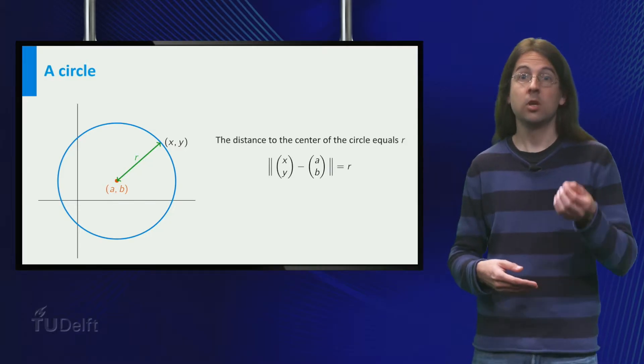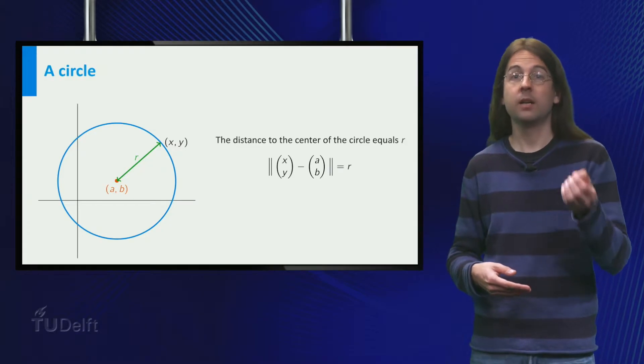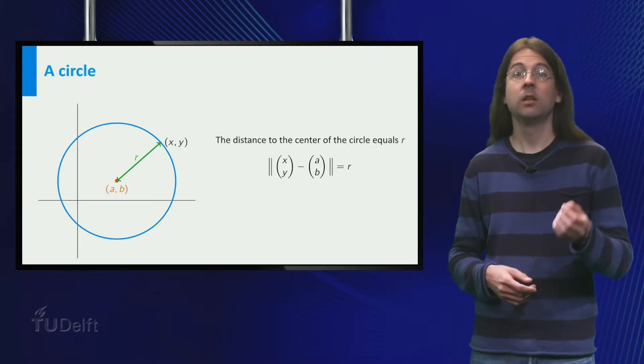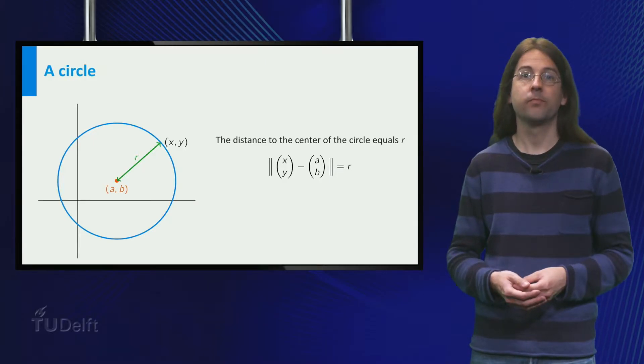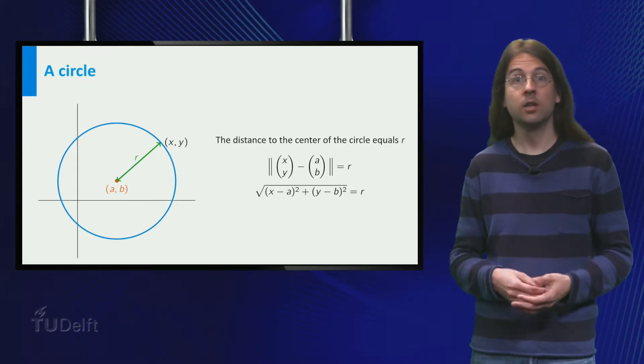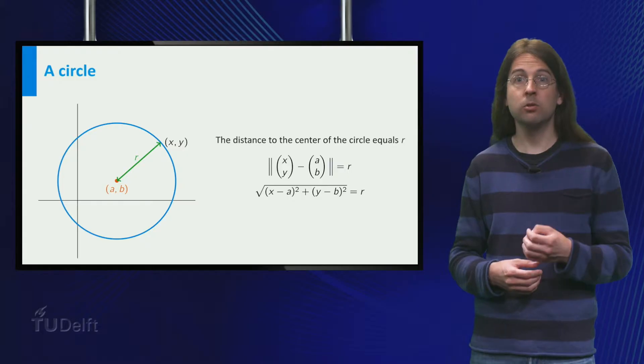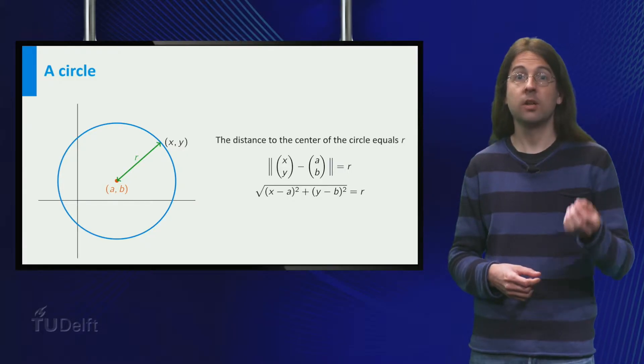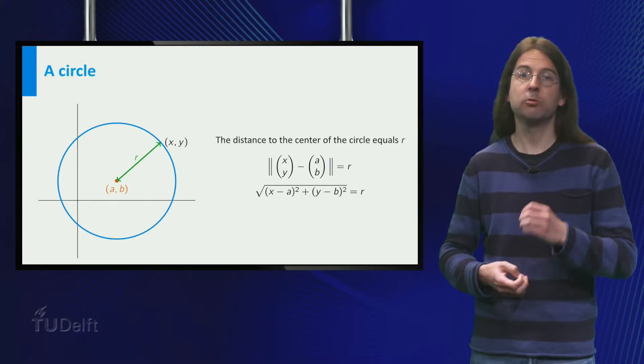The norm of a point xy minus the center ab equals r. Writing out the formula for the norm, or the length of a vector, we obtain that the square root of x minus a squared plus y minus b squared equals r.